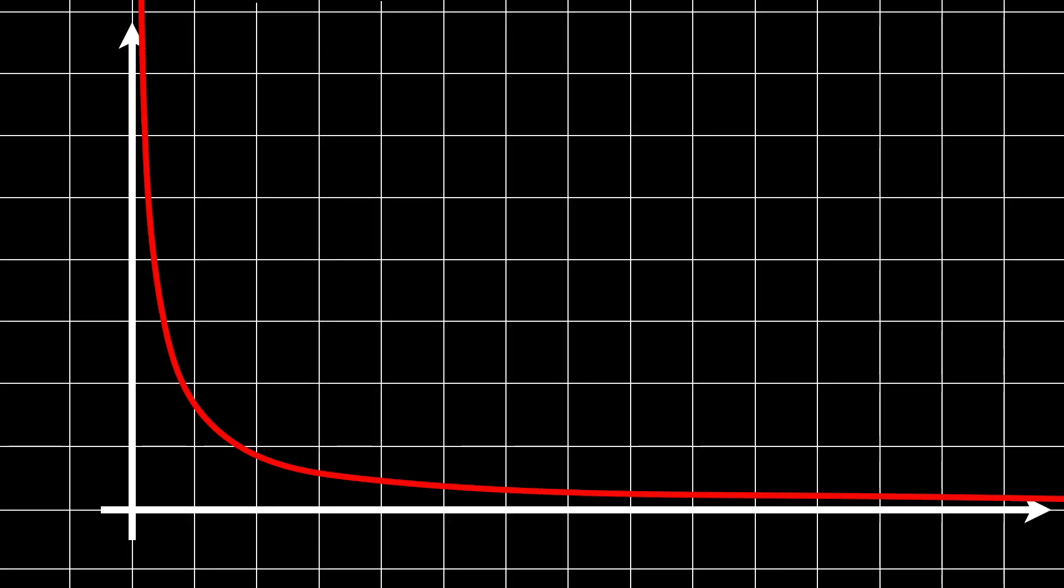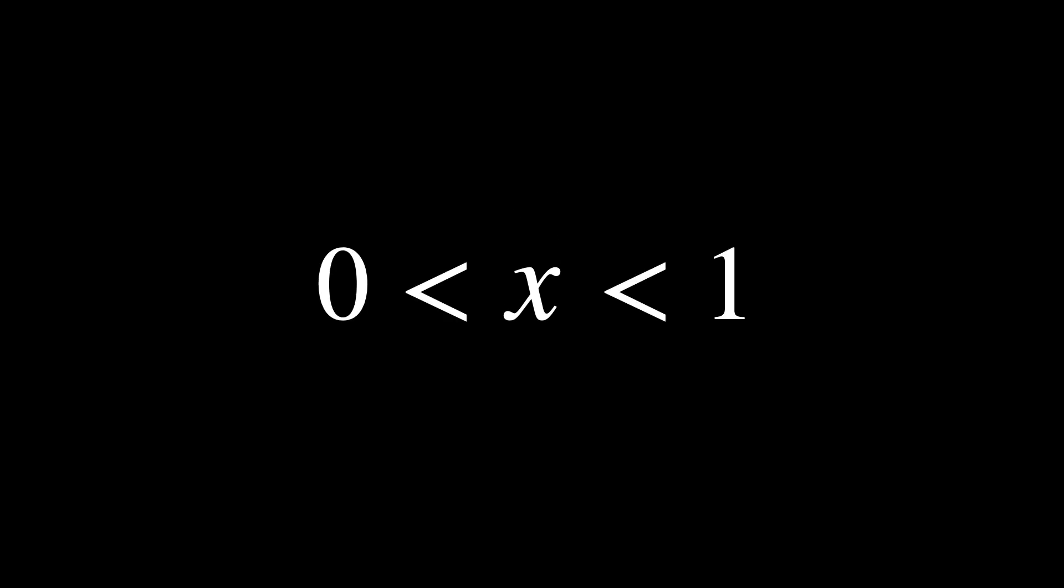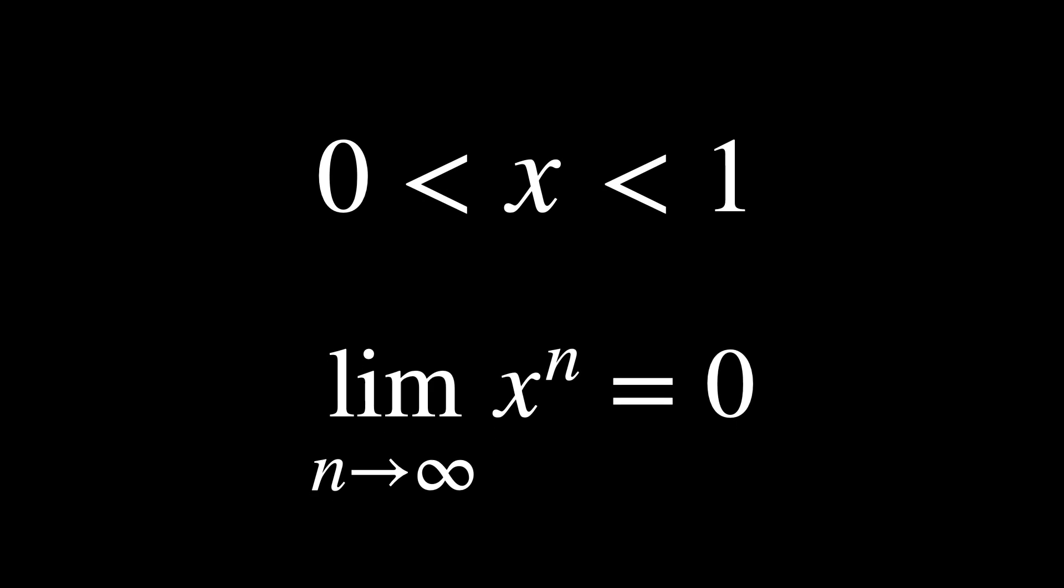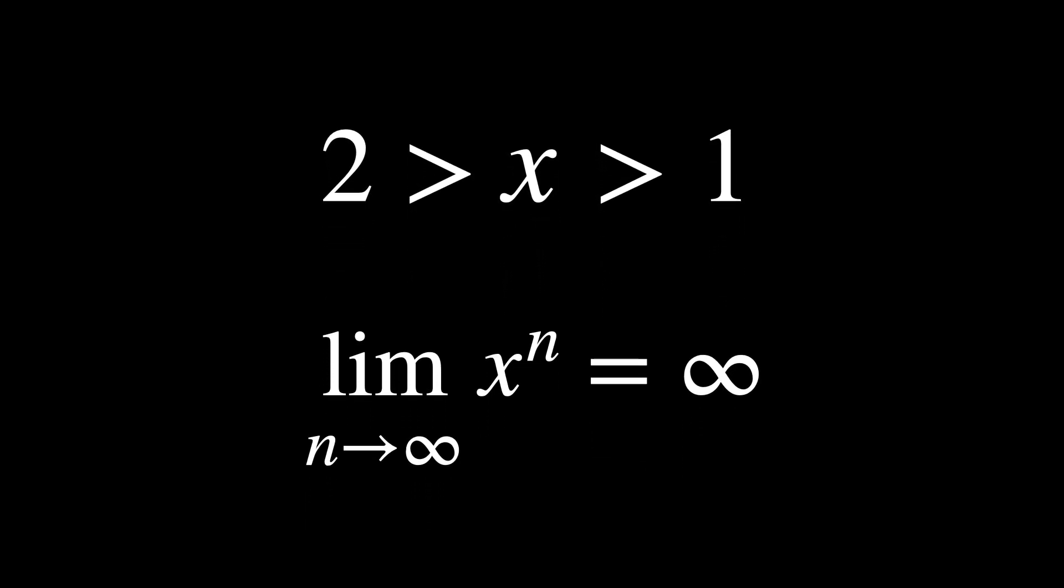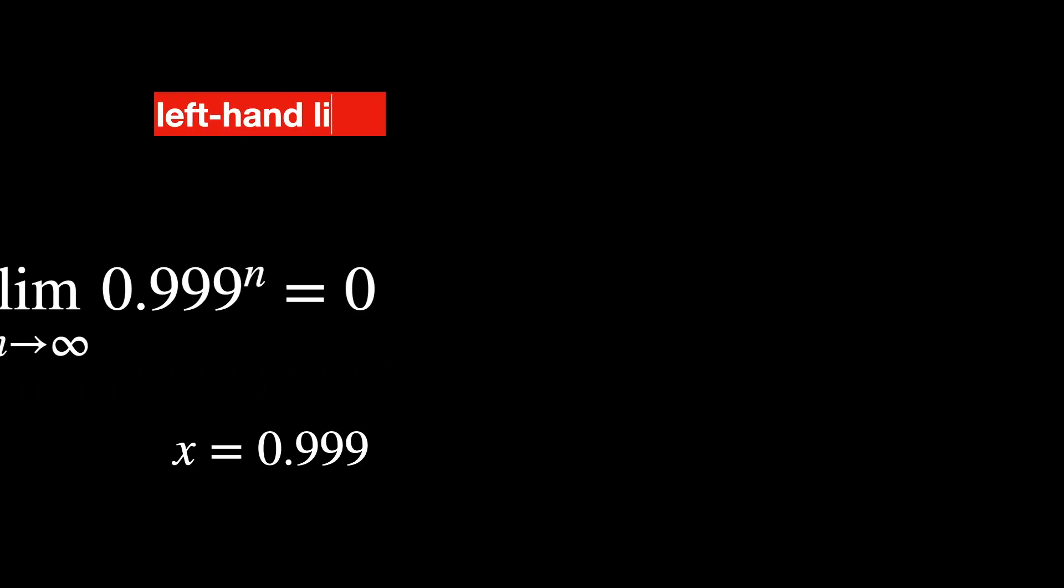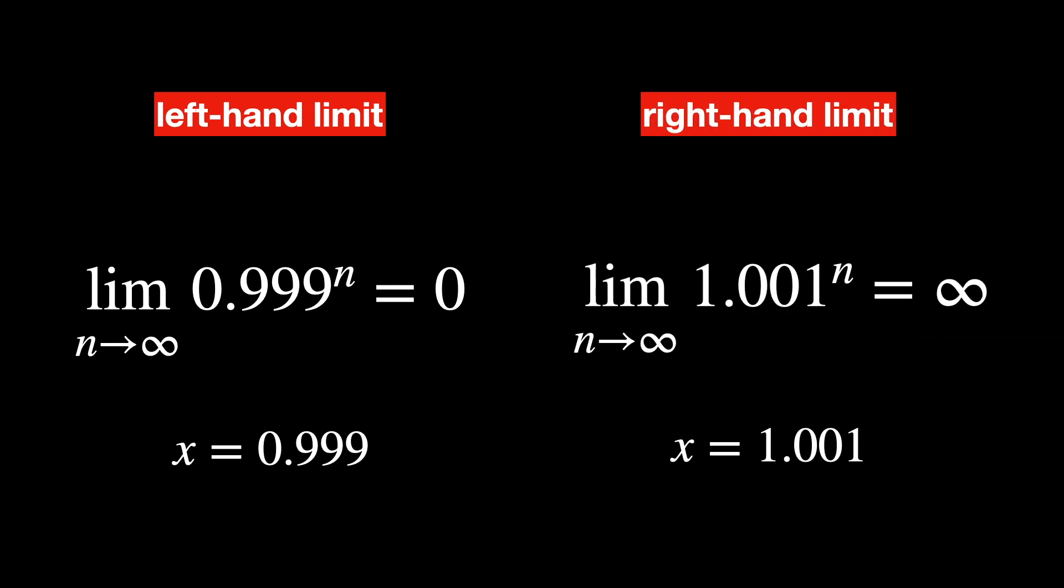Well, one of the indeterminate forms is 1 to the power of infinity. At a superficial level, one might think 1 raised to the power of infinity should remain 1, since it's 1 multiplied by itself an infinite number of times. But since infinity is not a number, we have to treat it like a function that infinitely approaches 1. If we take a number that is less than or very close to 1, then multiplying it by itself an infinite number of times gives a very, very small number and is approximately equal to 0. If we take a number that is greater than and very close to 1, then multiplying it by itself an infinite number of times gives a very, very big number and is approximately equal to infinity. It means the limit of x to the power of infinity, as x goes to 1, does not exist, because its left-hand limit is 0 and the right-hand limit is infinity.